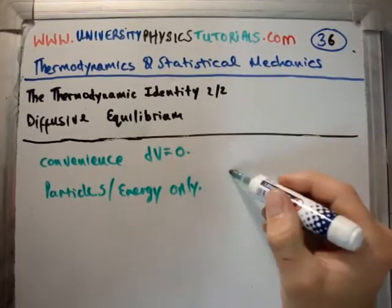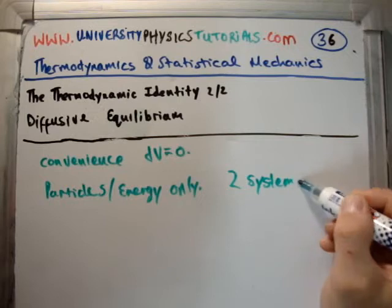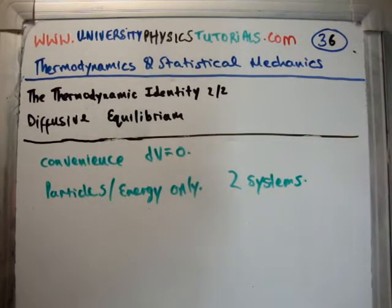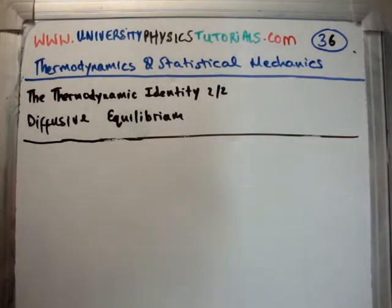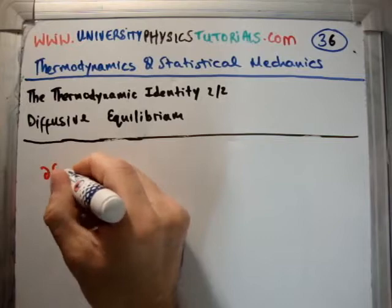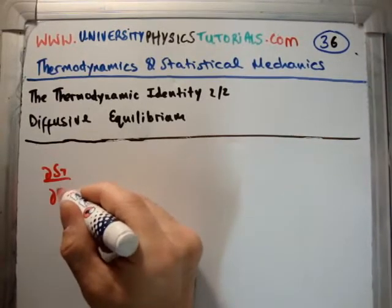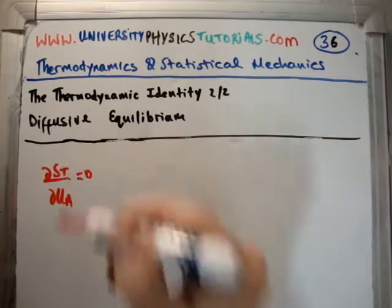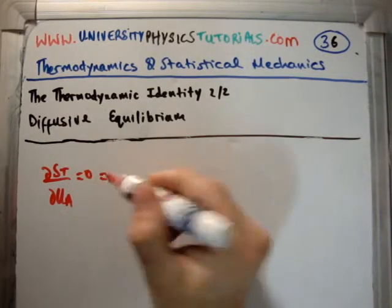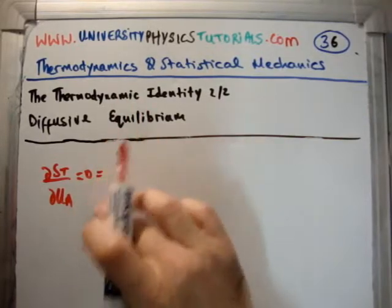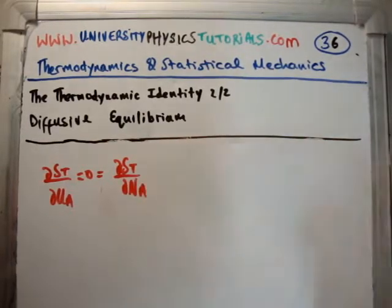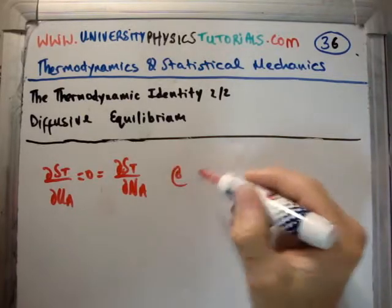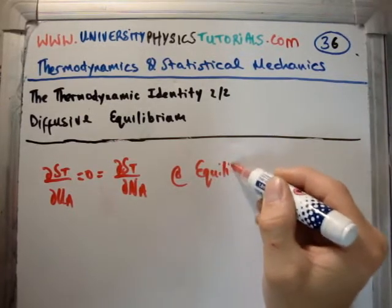What we're going to have is two systems, just like we did in video number 35. We're going to bring two systems together and see what they do in order to come into diffusive equilibrium — when there is no longer an exchange of particles between the two systems. We know that equilibrium happens when the total rate of change of the total entropy with respect to the energy in A is equal to zero. We've seen that numerous times. Similarly, because we're now talking about exchange of particles, del S total with respect to the number of particles in A also has to be zero at equilibrium.